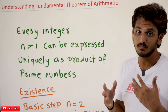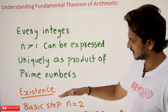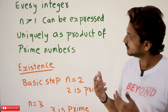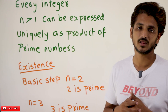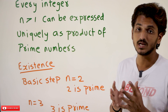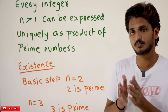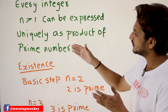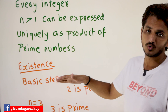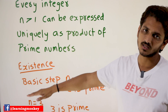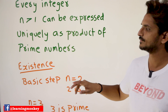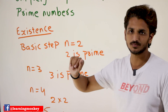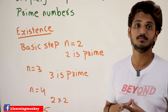What does 'uniquely' mean? We are going to understand that in the following steps. Let's try to understand the mathematical proof for why we can express any number in the form of a product of prime numbers. This mathematical proof is divided into two parts: the first one is the existence part, and the next one is the uniqueness part.